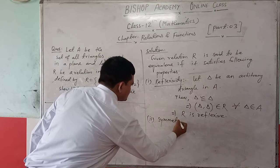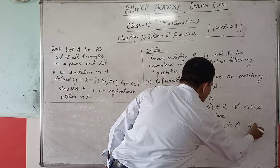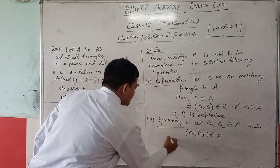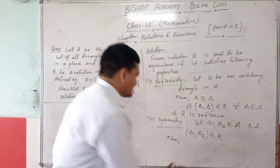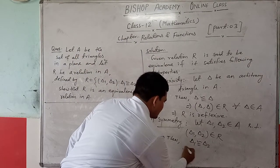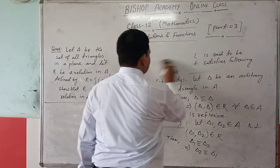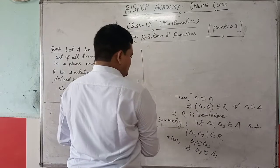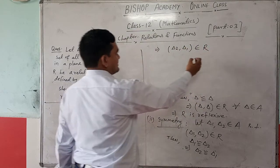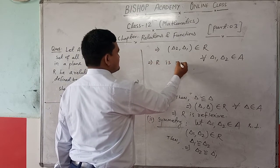Second, symmetry: Let Δ1, Δ2 belong to A such that (Δ1, Δ2) belongs to relation R. Then Δ1 is congruent to Δ2, which implies Δ2 is congruent to Δ1. This implies that (Δ2, Δ1) belongs to R for all Δ1, Δ2 belonging to A. Therefore, R is symmetric.